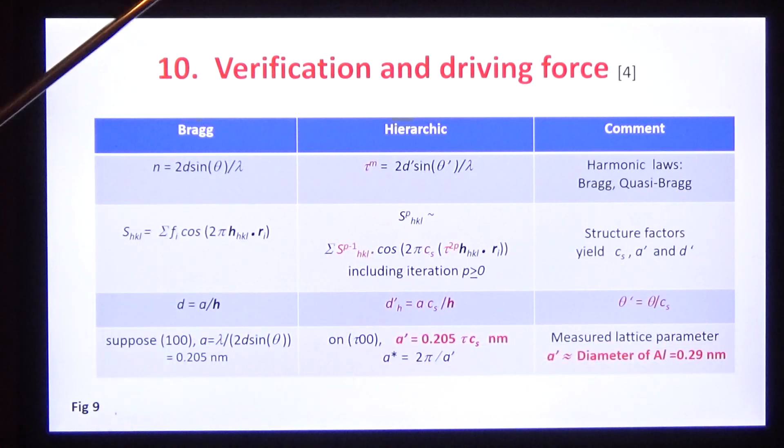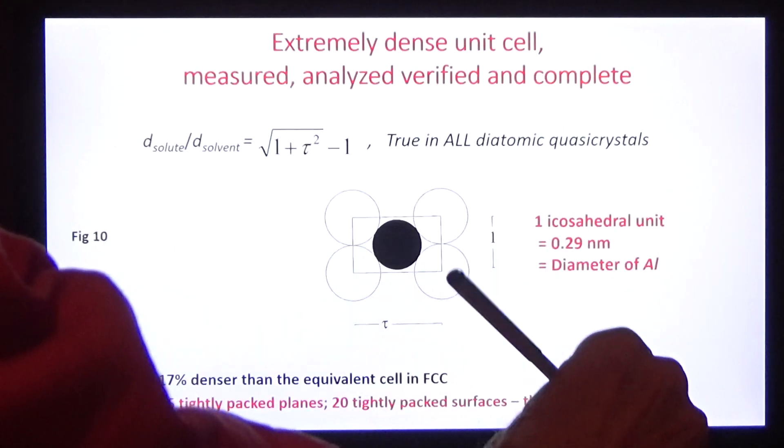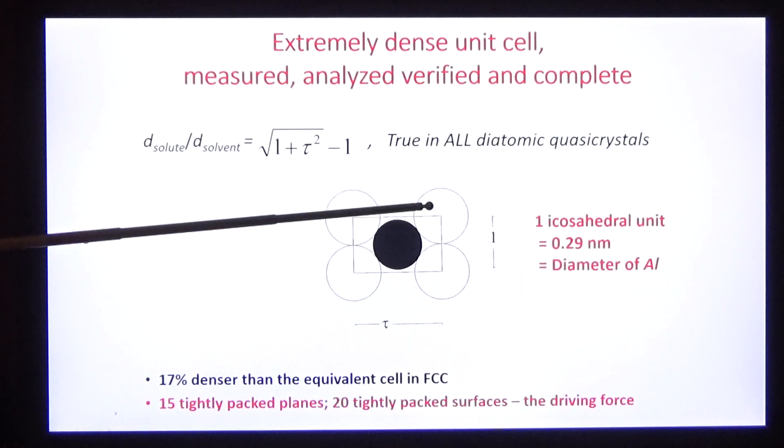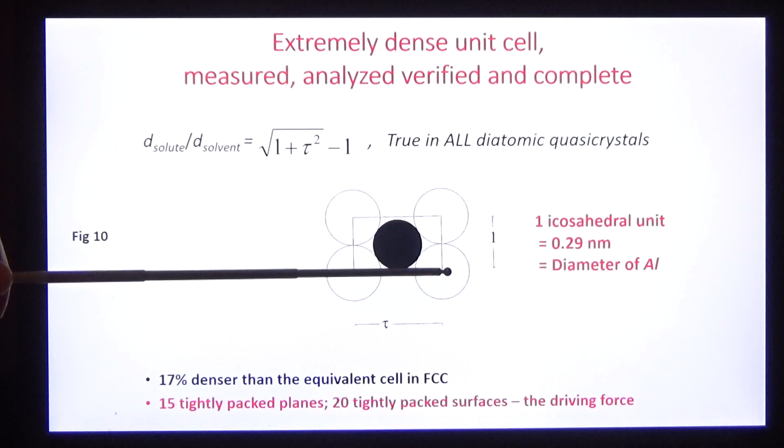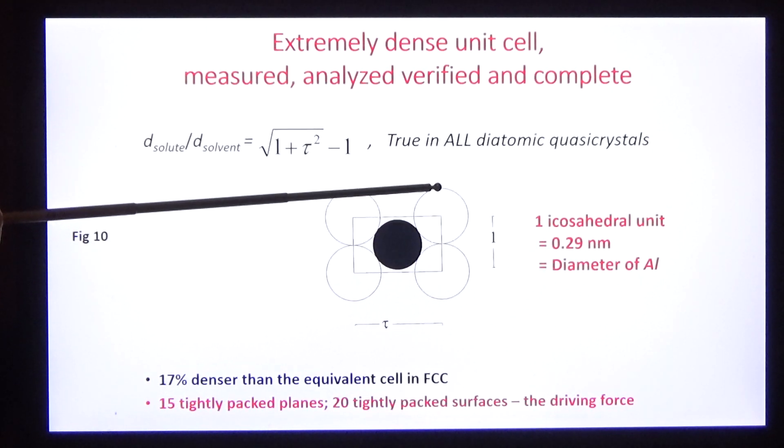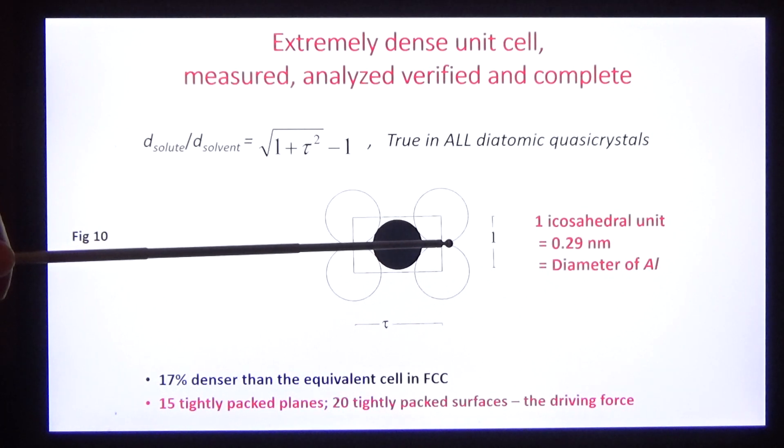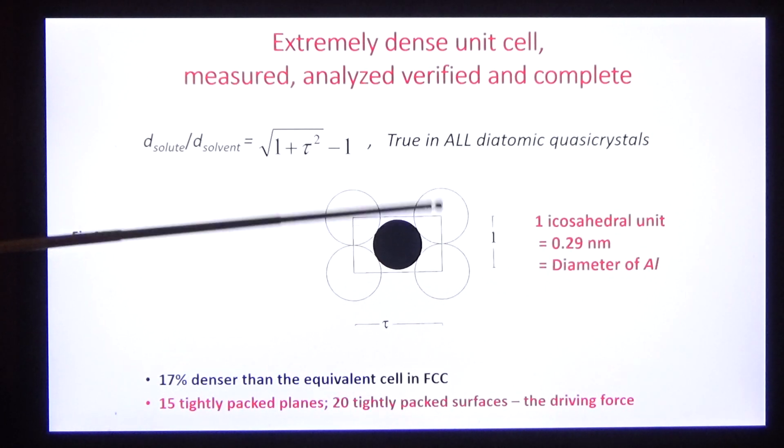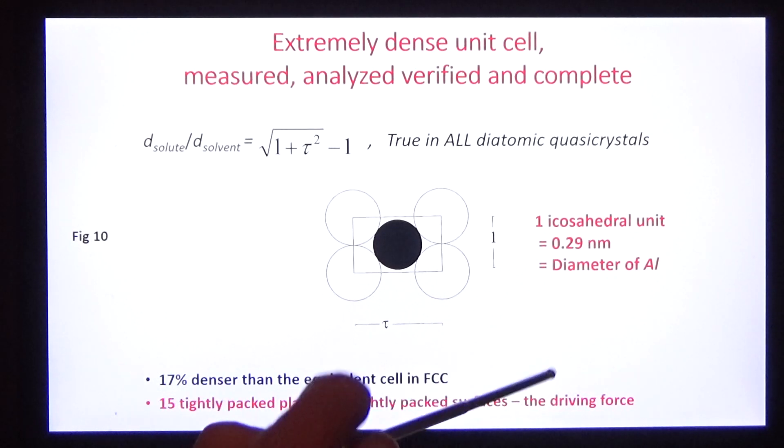We find a very important number, 0.29 nanometers. Why is that important? Because it's the measure of the lattice parameter, which is the same as the measurement of the aluminum atoms, verifying the structure, the diffraction, and the method.